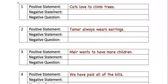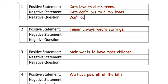The positive statement is 'Cats love to climb trees.' We make that into a negative statement: 'Cats don't love to climb trees.' Now we know that 'don't' can be the first word in the sentence, so the negative question becomes: 'Don't cats love to climb trees?'